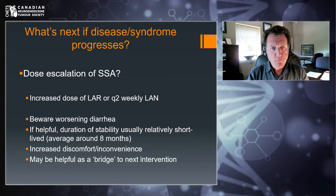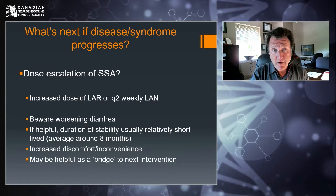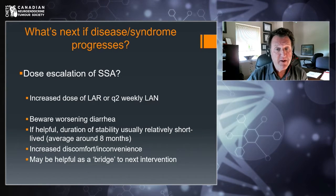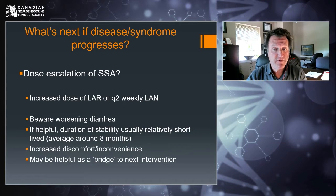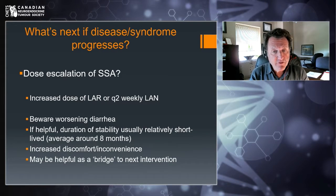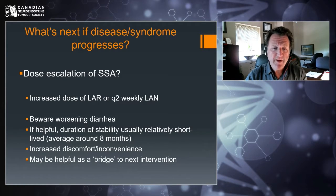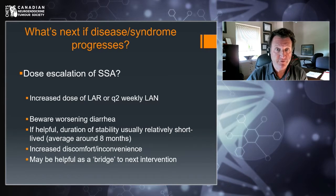So what's next if disease or the syndrome progresses? Many times we talk about escalating the SSA. With Sandostatin LAR, that usually means an increased dose. With lanreotide, that means shortening the schedule from every four weeks to every two weeks. Remember that anytime we increase SSAs, watch out for worsened diarrhea and don't confuse it with worsening syndrome. The average duration of disease control from escalation is about eight months. There's also the risk of increased discomfort — with LAR that usually means two shots rather than one per month, and with lanreotide you're now getting injections every two weeks. So it may not be a great long-term solution and may be helpful as a bridge to the next treatment.